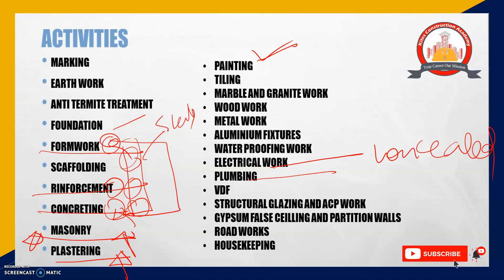After concealed works comes painting — the application of paint over the finished plastered area to increase the aesthetic appearance of the building. After painting comes flooring. The flooring activity may use vitrified tiles, ceramic tiles, granite, or marble, depending upon the requirement of the project, the specification, or the client's requirement.